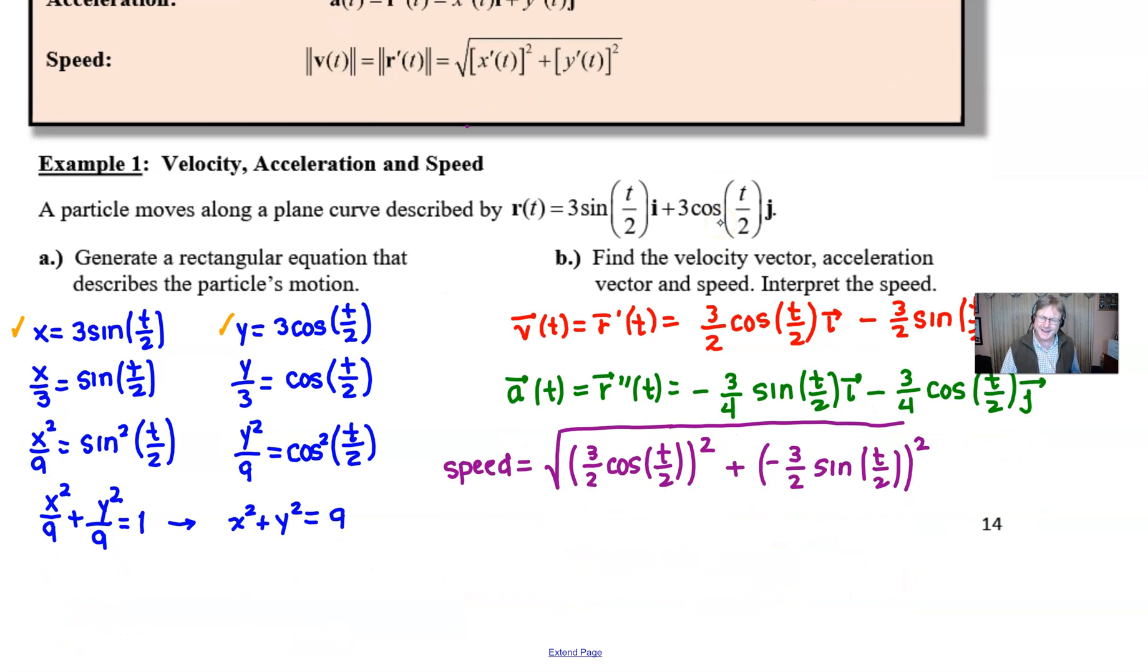That would be the unsimplified speed. If we want to continue to simplify, which we might need to if we have any chance at interpreting it, we would find we have the square root of (9/4)cos²(t/2) + (9/4)sin²(t/2). Okay, now where are we going from here? The cos²(t/2) + sin²(t/2) will be left over as soon as you factor out the 9/4. Instead of writing out the cosine squared plus sine squared, isn't all that just going to become one because of the Pythagorean identity? And therefore we end up with 3/2.